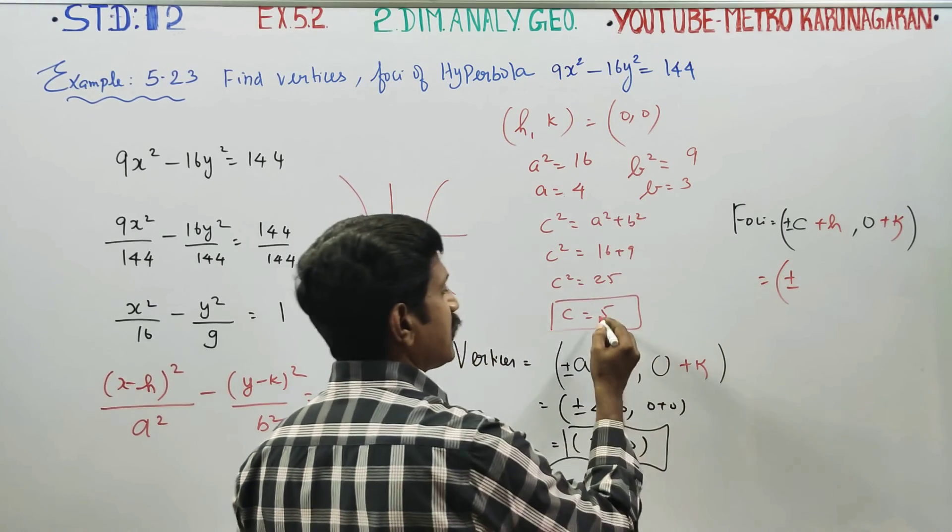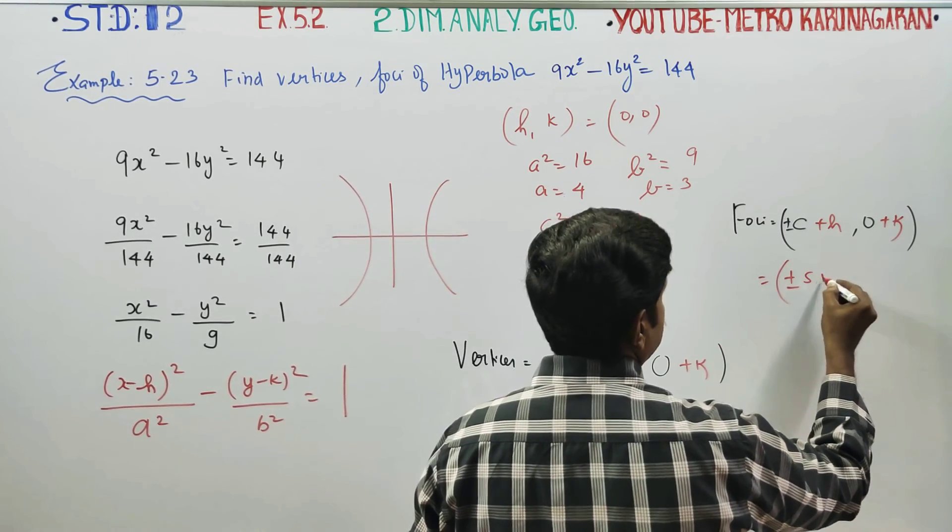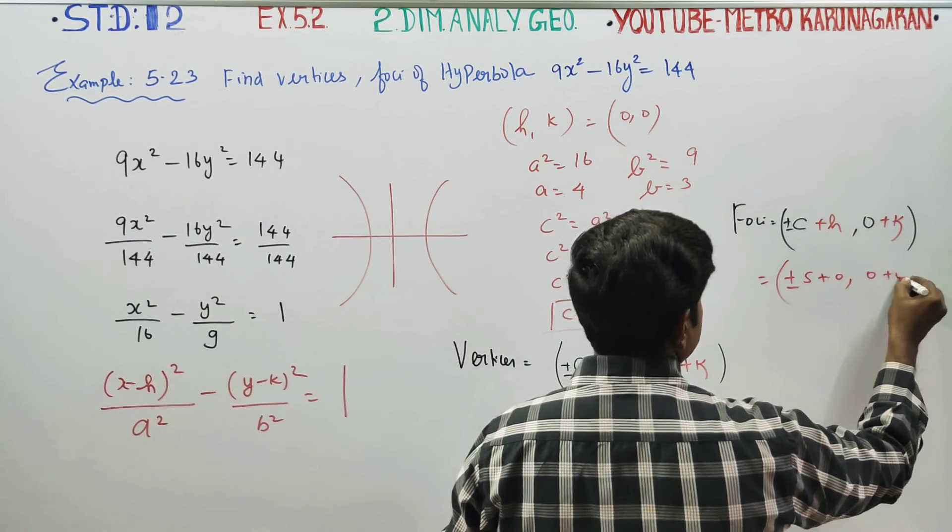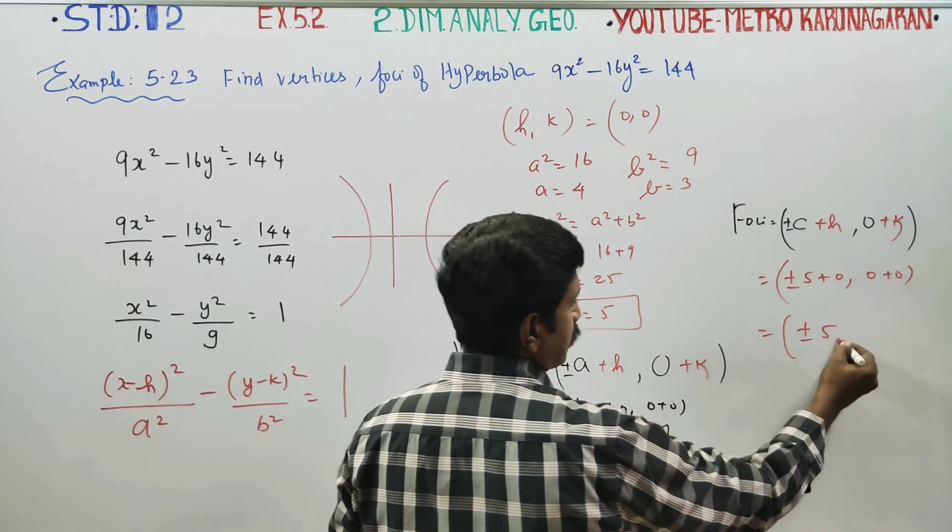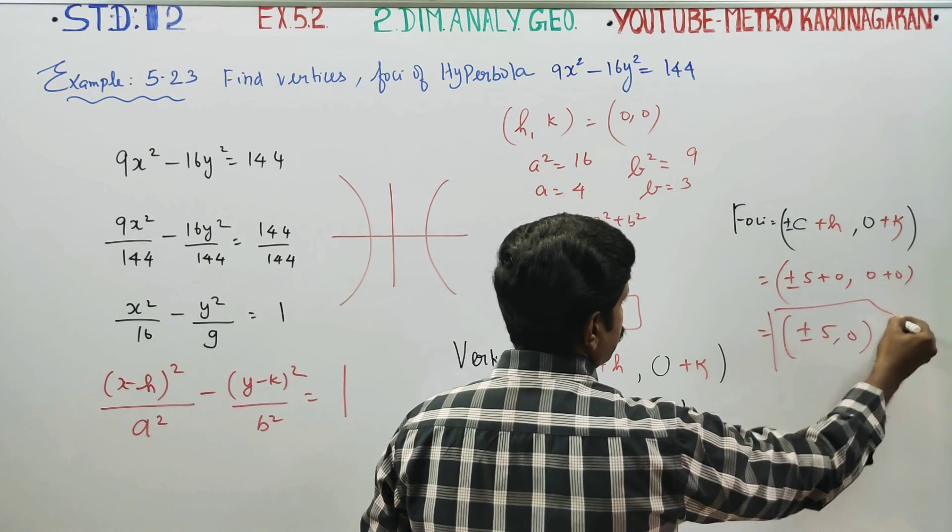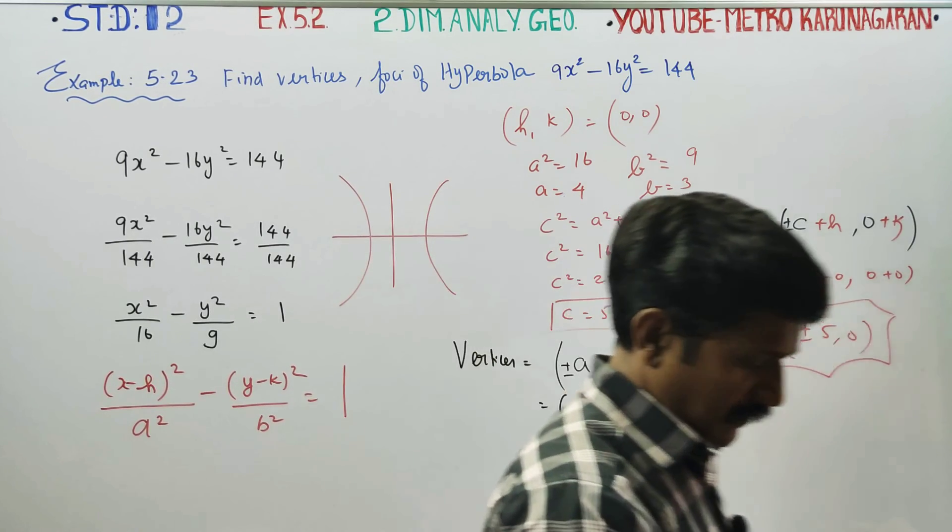Therefore, my final answer will be (±5 + 0, 0 + 0). Therefore, your foci will be plus or minus 5, 0. Okay, thank you.